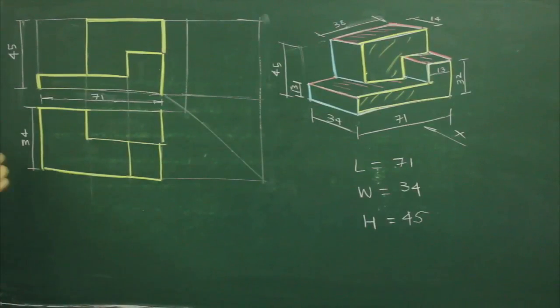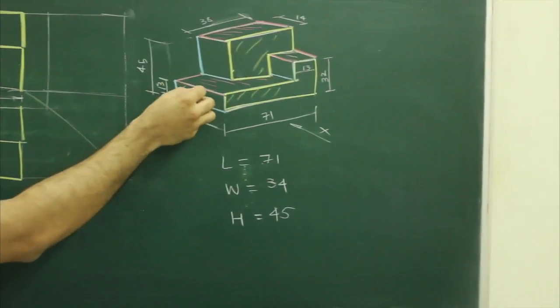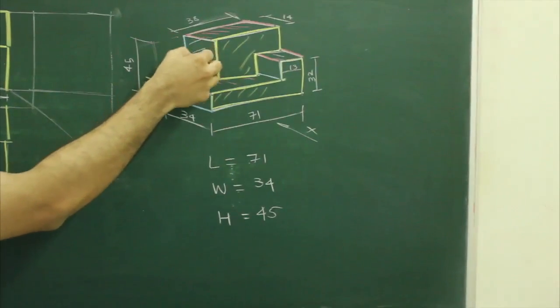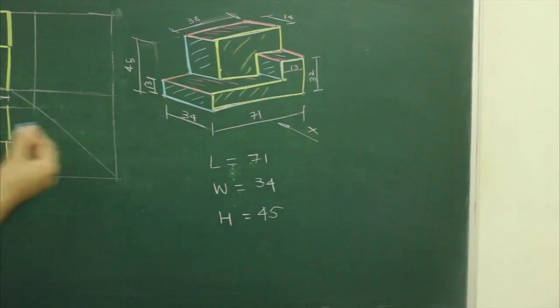Now to draw side view, again if you see, there are three blocks: one, two and three. So to draw first block, which is 34 by 13,